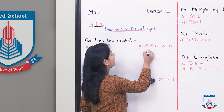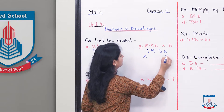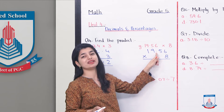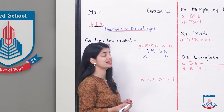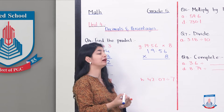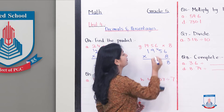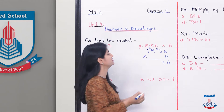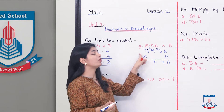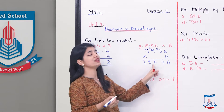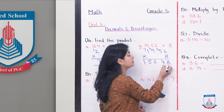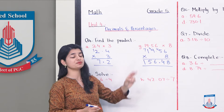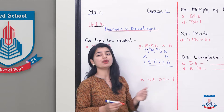Similarly, if we look at part G: 19.56 into 8. When we are multiplying this, you will see how many numbers are after the decimal — one digit, the other digit — and then we have a decimal. So, whatever your answer is, you will have two digits move and place the decimal. We will multiply this as an ordinary number. 8 into 6 is 48, 4 carry. 8 into 5 is 40 plus 4 is 44, 4 carry. 8 into 9 is 72 plus 4 is 76, 7 carry. 8 into 1 is 8 plus 7 is 15. So, what is your answer? 156.48. Why is this point here? Because one digit, two digits — and then we put our decimal. We know that there are two decimal places, so we place the decimal here. And with that, we have covered question number 4.